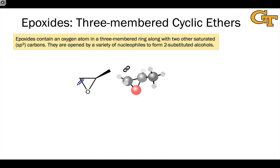Epoxides are a unique class of cyclic ethers in which both of the carbons linked to oxygen are also linked to each other. This creates a three-membered ring containing the two sp3 or saturated carbons and the ether or epoxide oxygen.